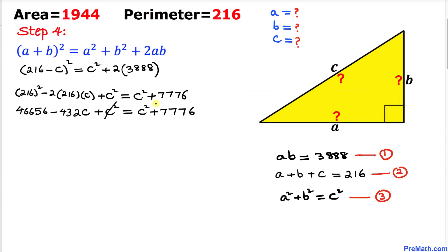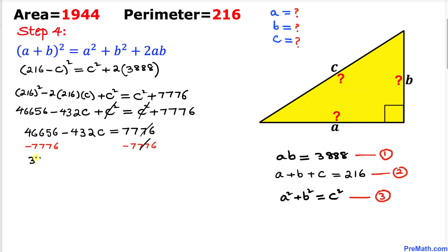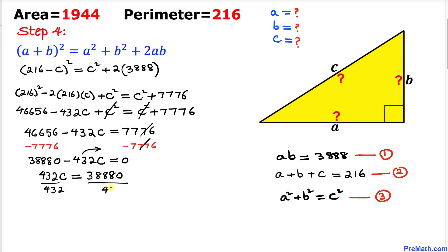We can see that c² on the left side and c² on the right side cancel each other out. Then subtracting 7776 from both sides, we end up with 46656 minus 432c equals 0. Moving 432c to the other side and dividing both sides by 432 to isolate c, we find that c equals 90.